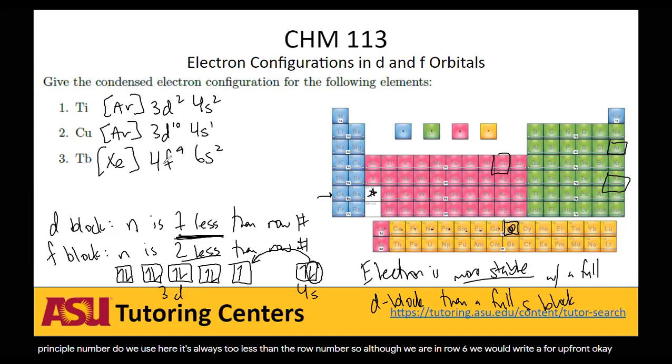So that's how you would do the configurations for elements that exist within the d and f blocks. You just have to remember to take 1 less for the row number for d block, 2 less for f block. And then in weird random cases, particularly in this column, just be aware you may have to steal electrons away to have a more stable d block over a more stable s block.